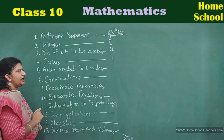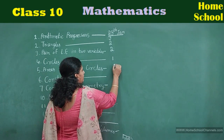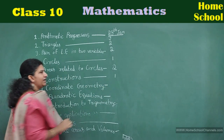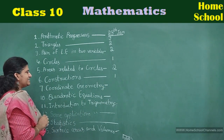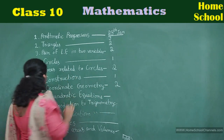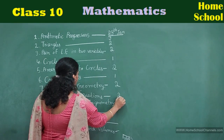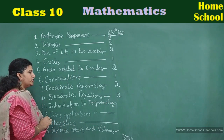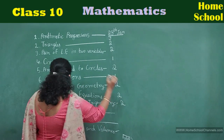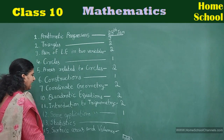Fifth chapter — Areas Related to Circles — a little lengthy, so two days. Sixth chapter — Constructions — one day, more than enough. Seventh chapter — Coordinate Geometry — two days. Tenth chapter — Quadratic Equations — two days. Introduction to Trigonometry — two days. Some Applications of Trigonometry — one day.